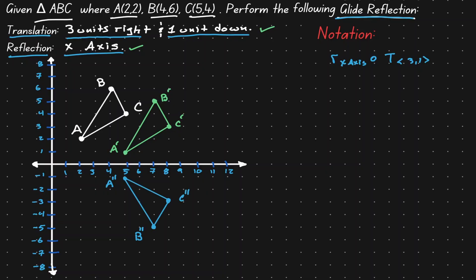Let's connect those points and we are done. Triangle A'', B'', C'' is the result of a glide reflection — we first performed a translation and then performed a reflection.